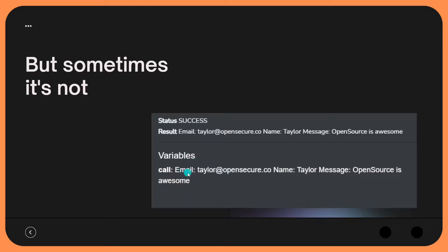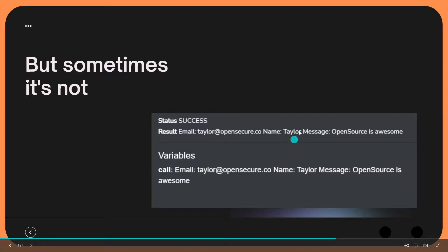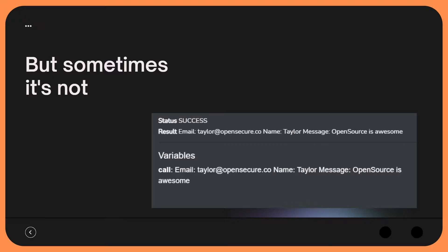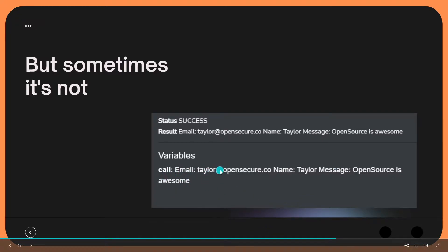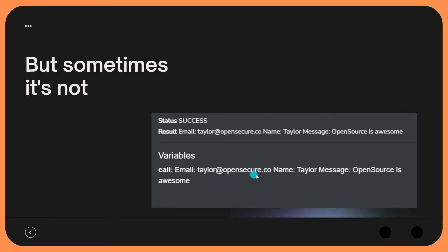For example, you see an email like taylor@opensphere.co, a name field as Taylor, and a message that says 'open source is awesome.' Email doesn't have its own key and field, name doesn't have its own key and field, and message doesn't have its own key and field. If we try to extract everything natively in Shuffle, we'd get this whole string — but maybe I want to parse out the email address and send a message, or capture the name for a greeting.